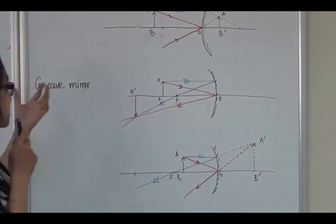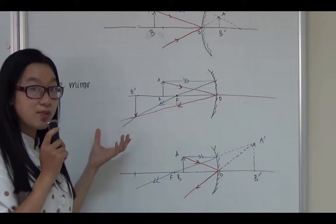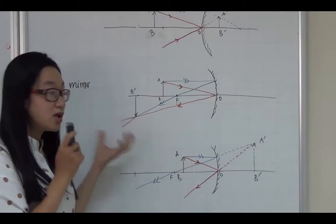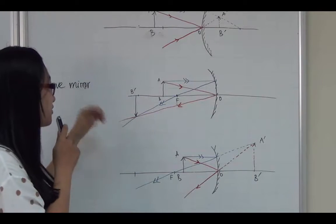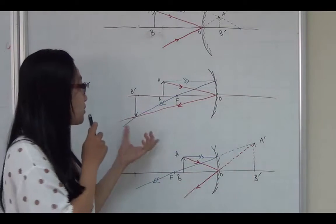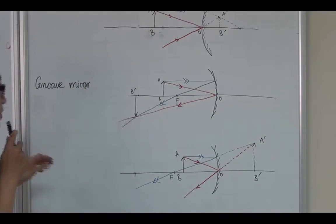What we get is a real image which has a larger size but is inverted. It means that we have an opposite direction compared with our object.